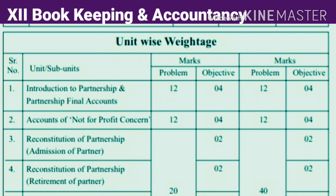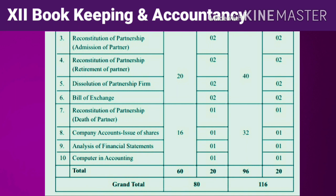Chapter number 3 is Reconstitution of Partnership, with 2 marks objective and 10 marks problem. Chapter number 4, Retirement of Partner, also has 2 marks objective and 10 marks problem. Chapter number 5, Dissolution of Partnership Firm, also has 2 marks of objective and 10 marks problem.